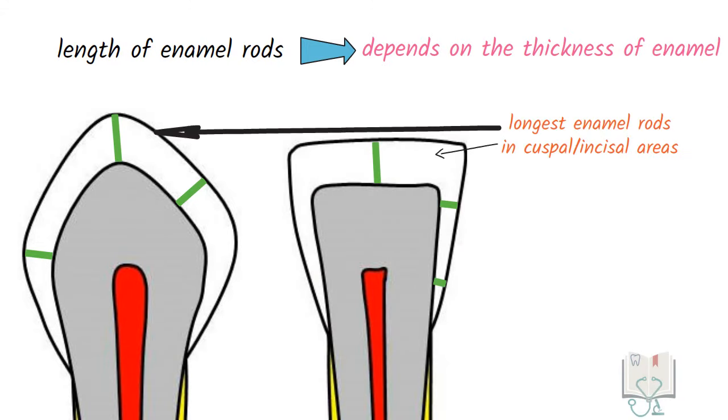So the length of enamel rods is not fixed but actually depends on the thickness of the enamel. Therefore, they are the longest in the cuspal or incisal ridge area where they may reach up to 2.5 millimeters and shortest in the cervical area.